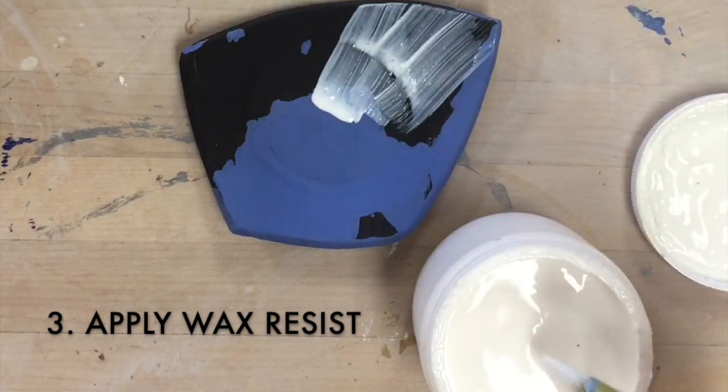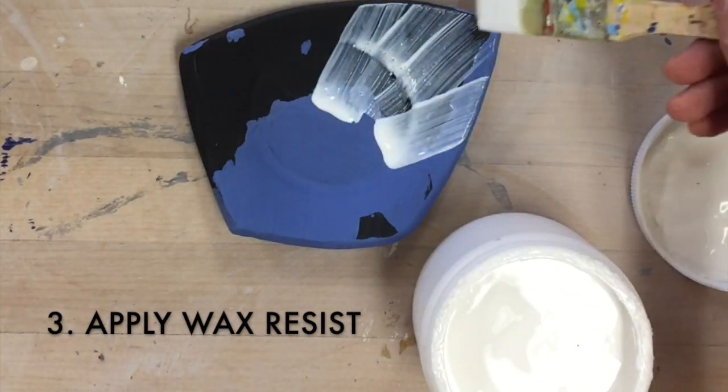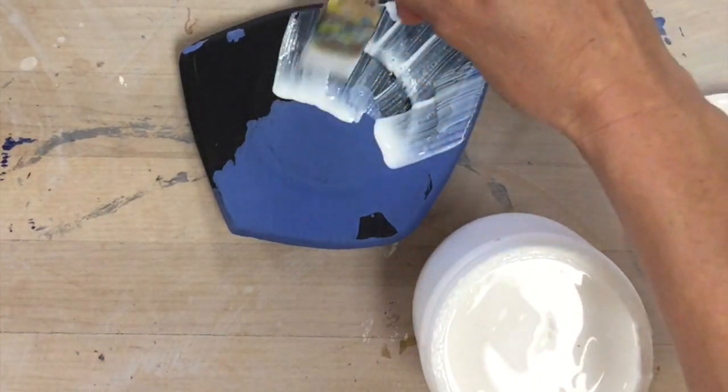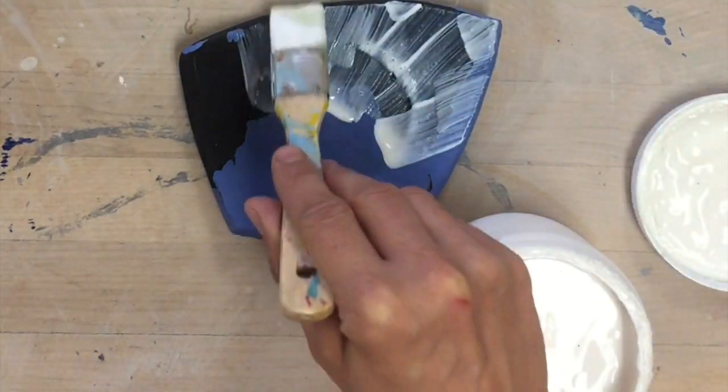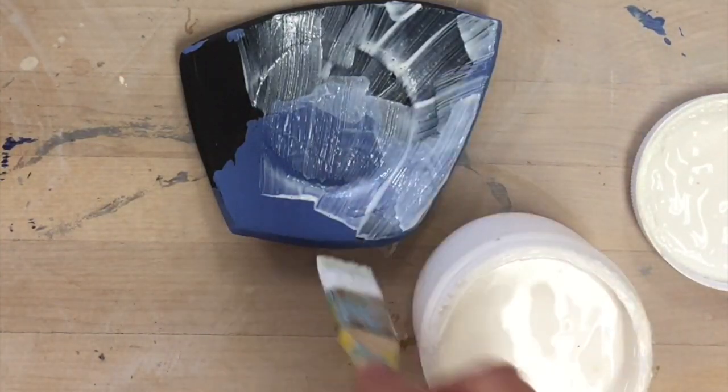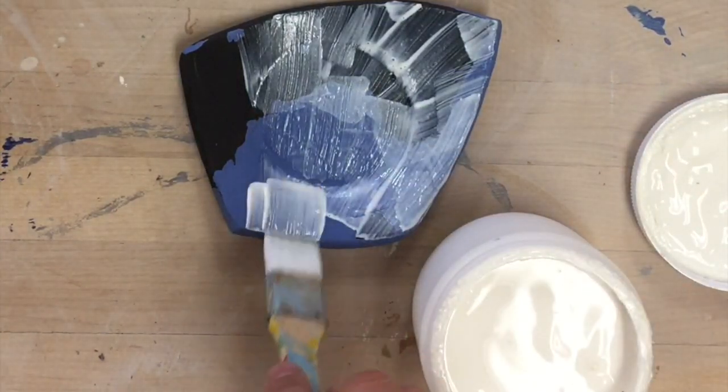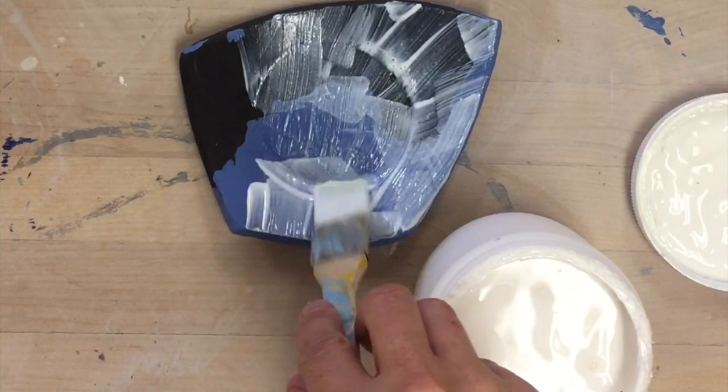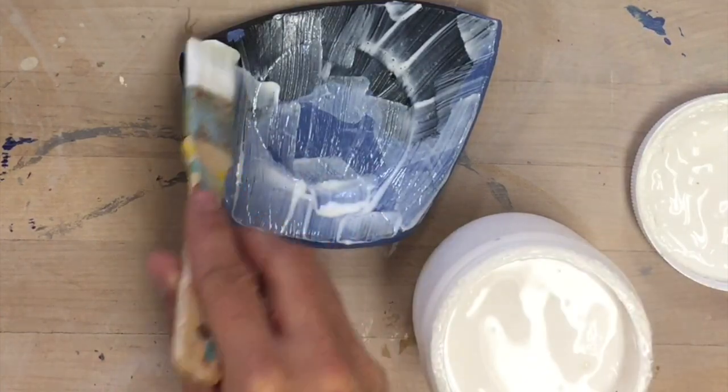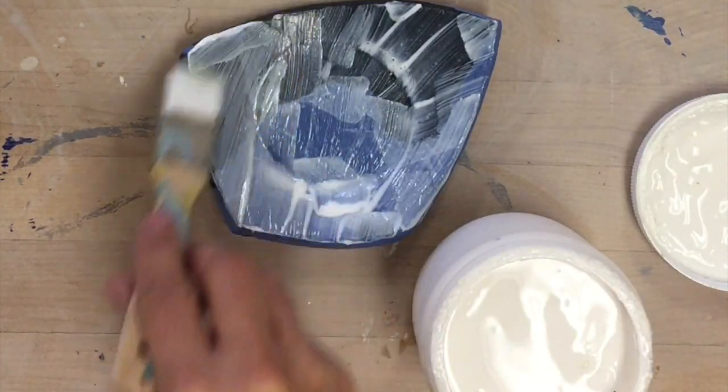And it doesn't have to be a thick layer, but I do want to make sure if I'm missing any spots that I go touch it up again. The brush strokes don't matter, this is a temporary material, so this will burn off at around 400 degrees in the kiln. Or because this is unfired, I can also scrape it off, which is exactly what we want to take advantage of here.